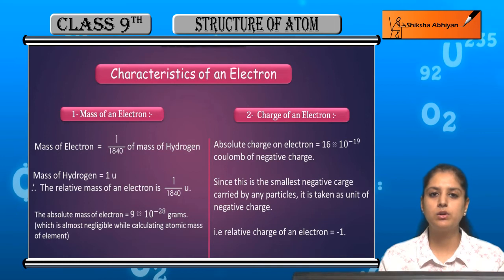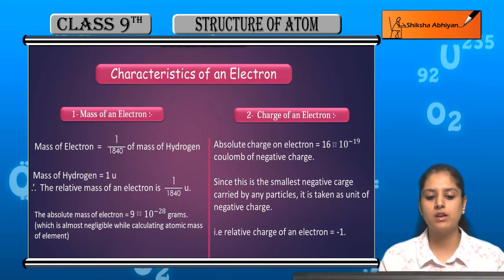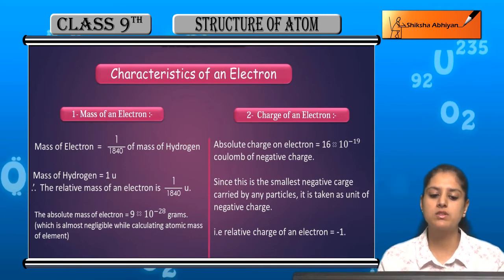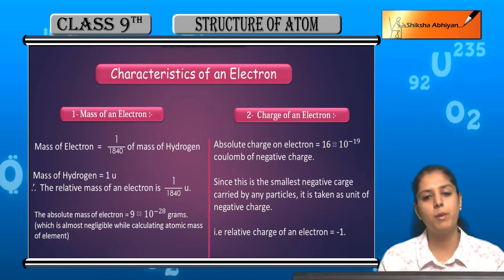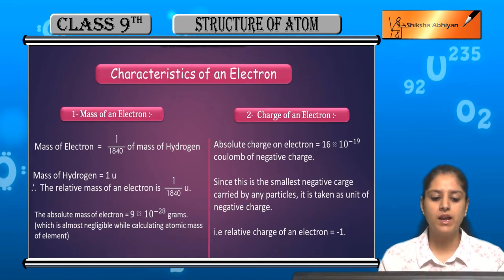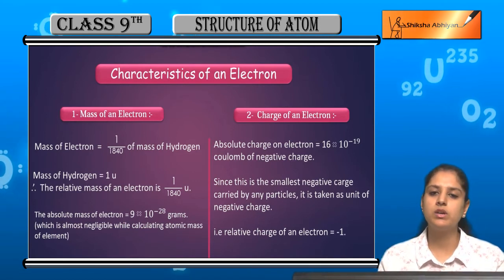Mass of electron is equal to 1/1840 of mass of hydrogen. The mass of hydrogen, its 1/1840th part, is the mass of electron. So if we take hydrogen's mass as one unit.